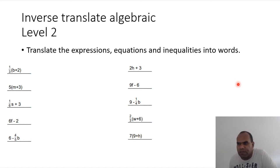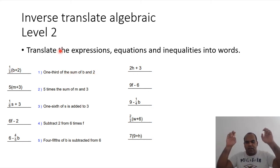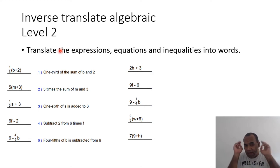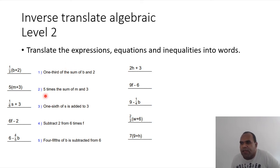Level 2: translating expressions into words — expressions, equations, inequalities. The first one: 'one-third of the sum of b.' The idea for 'of' in math means multiplication. Remember: 'off' means multiplication. The next one, number two: 'five times the sum of m and three.'